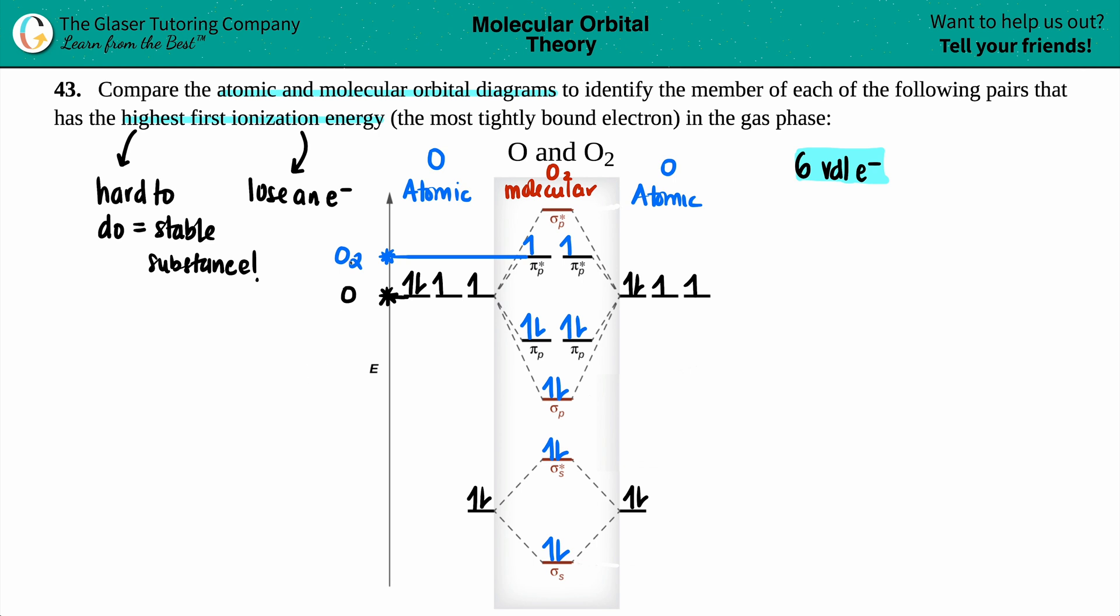So now we just have to say out of O2 and just your atoms, your oxygen, which one is going to have the highest first ionization energy. Now, remember we said, if it's high energy, it's super hard to do. It's going to be a more stable substance.